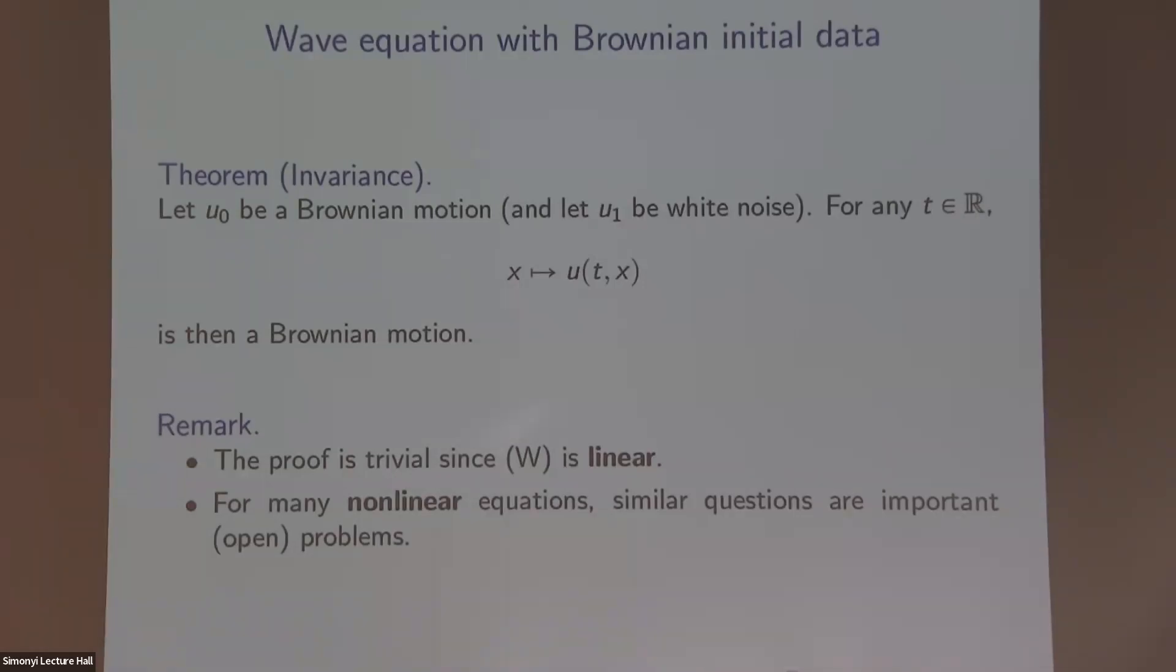So yeah, just to describe this again, of course, the solution kind of moves. That's what we saw. But the law doesn't change. It remains a Brownian motion. So maybe a few words about the proof. So the proof of this is more or less trivial. As long as you have the background in PDE and probability, it's like a two or three line proof. And that's because you can solve the linear wave equation explicitly. And you just calculate everything. And kind of the reason why this is so easy is because it's a linear PDE with constant coefficients. So these are not so complicated. Once you go to nonlinear equations, then things become actually quite difficult. So if you ask similar questions for nonlinear equations, these are kind of important problems. And many of such problems are actually open today.